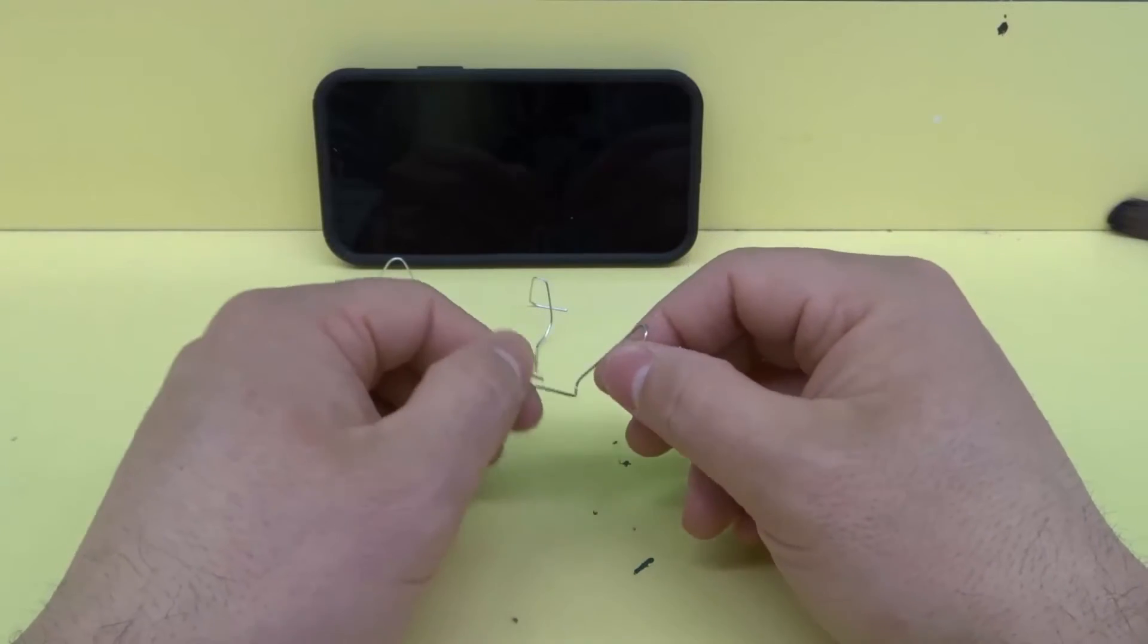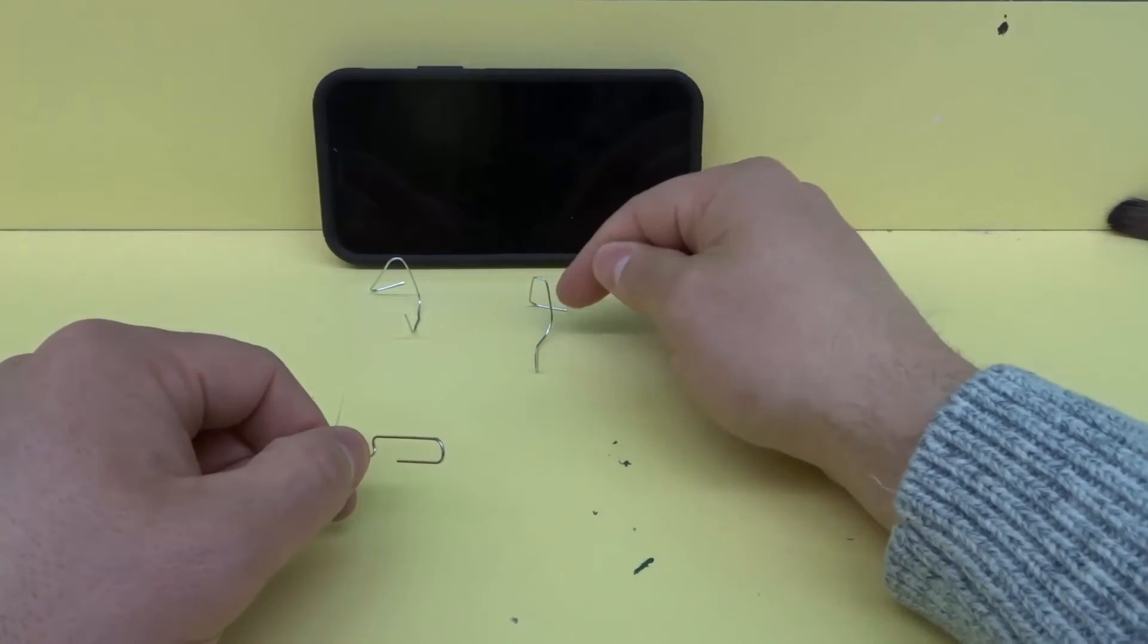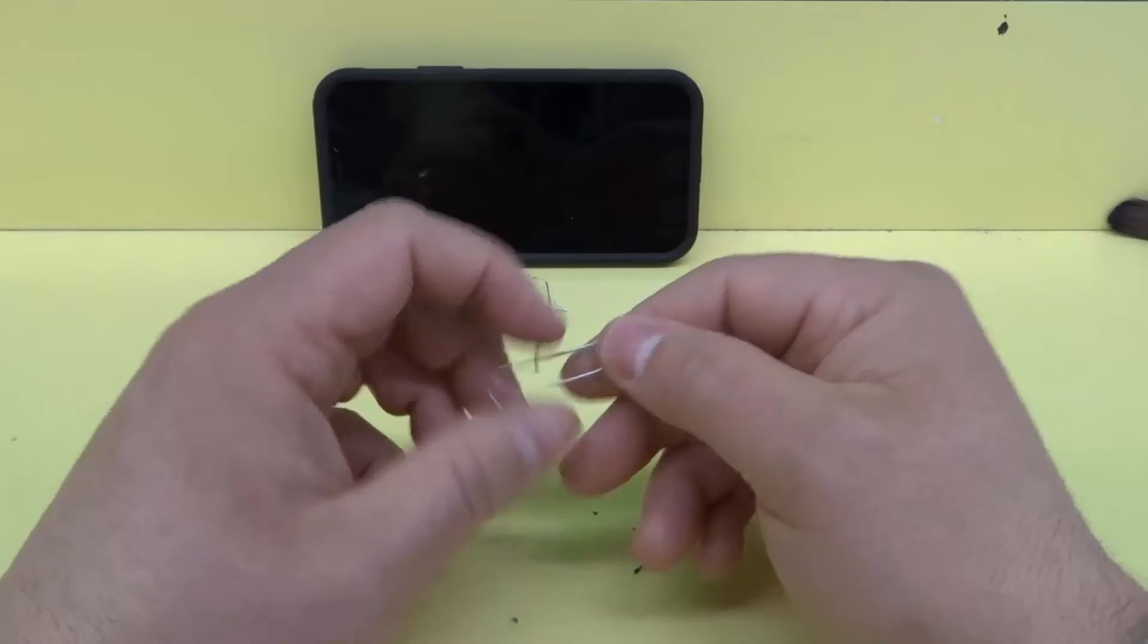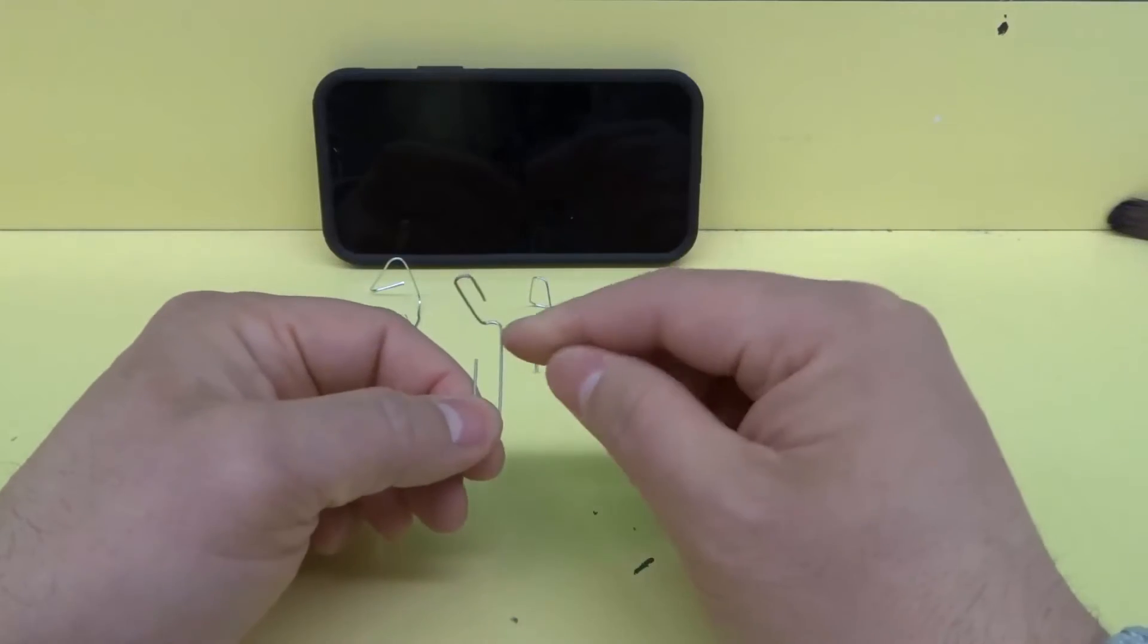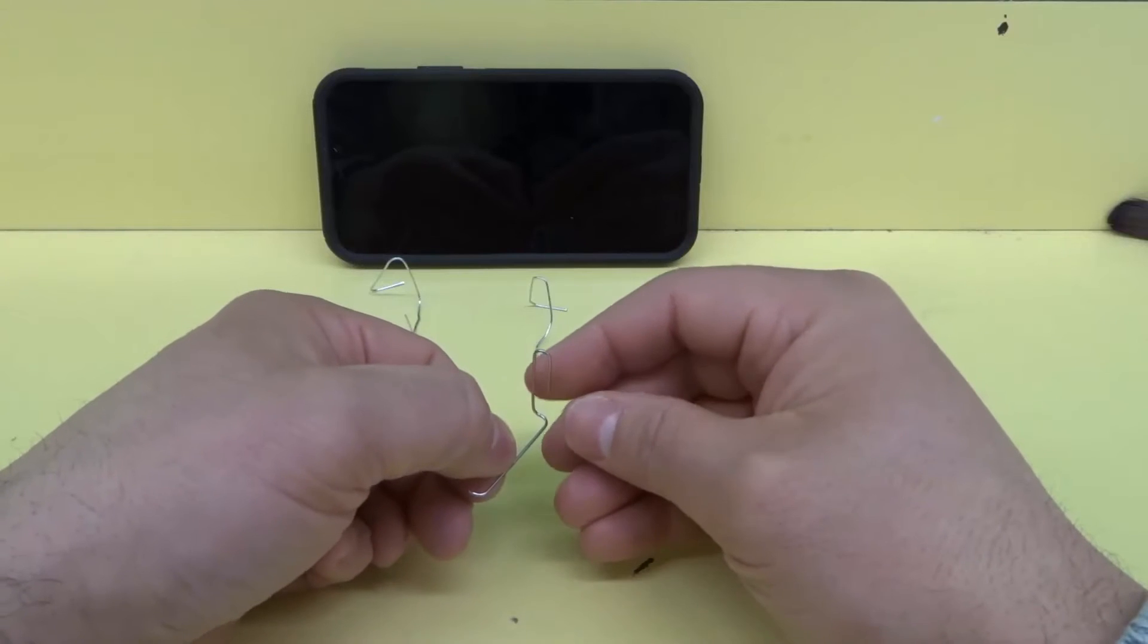Now what we want to do is two specific things. We need to make a bottom holding portion like this, we need to make the stand, and then we need to make a back piece that will support the stand. What I like to do is make it a little bigger to be the bottom holding portion.